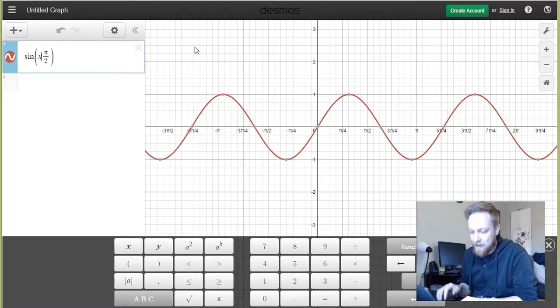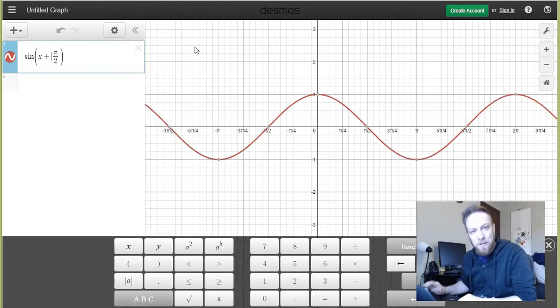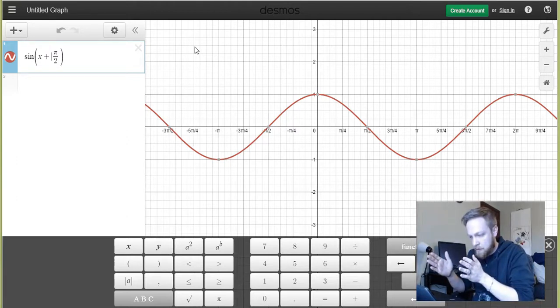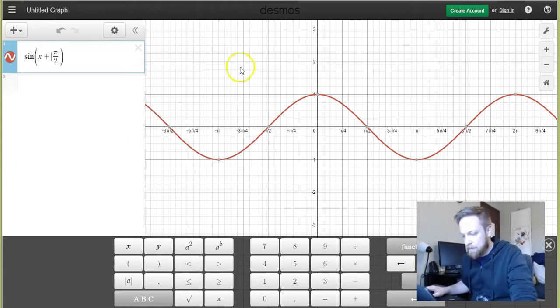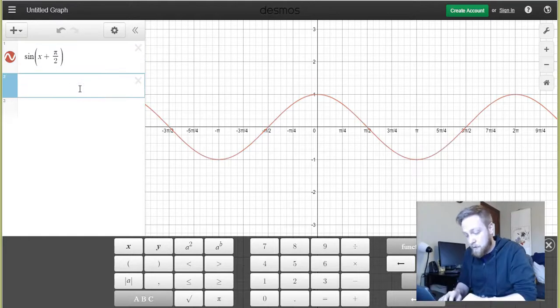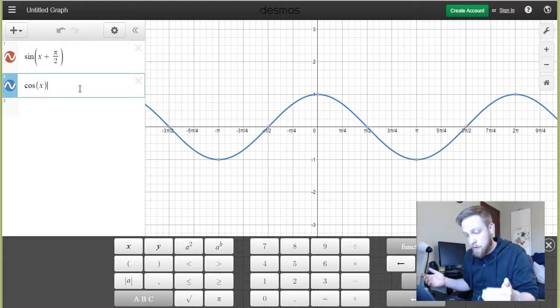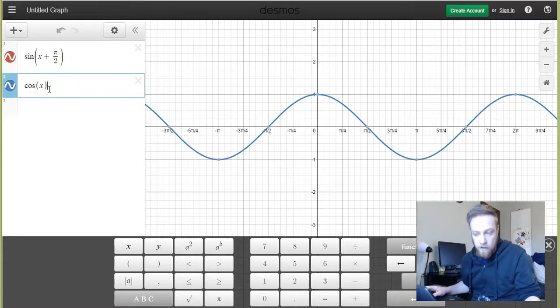I'm sorry. We would add pi over 2, which means that it's going to be shifting to the left. All right, yes. Now, what we have there is just cosine of x. So here's a really quick proof of a trig identity graphically.